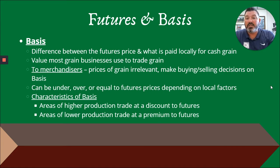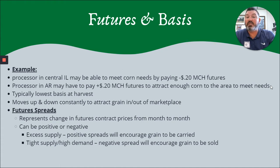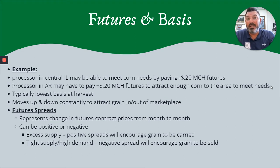Characteristics of basis — it's either higher or lower in relation to futures depending on what's going on. For example, a processor in central Illinois may be able to meet corn needs paying $0.20 below March futures (MCH stands for March in grain trading abbreviations). A processor in Arkansas may have to pay $0.20 over March futures to attract enough corn to their marketplace. Generally you'll see the lowest basis at harvest time, primarily because lots of grain is available and coming to the marketplace, but it's constantly going to move up and down to attract grain in or out.